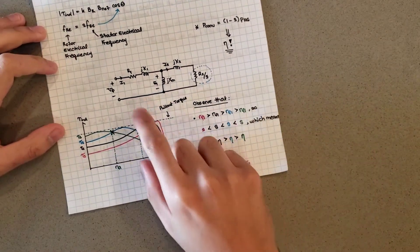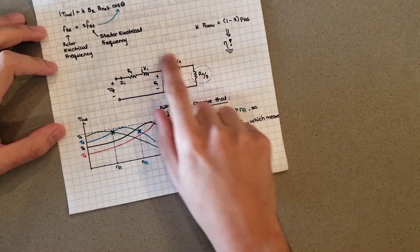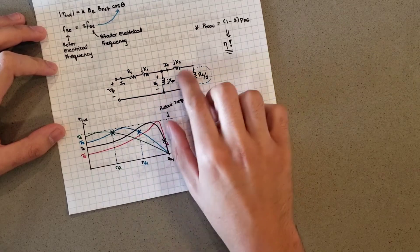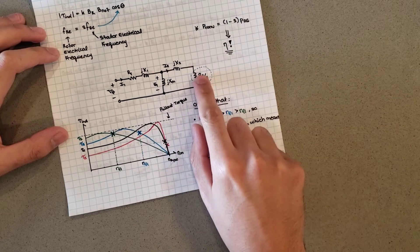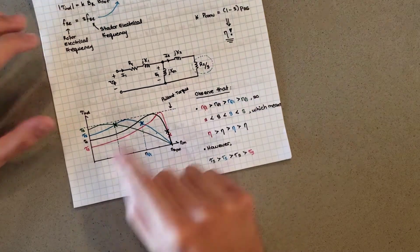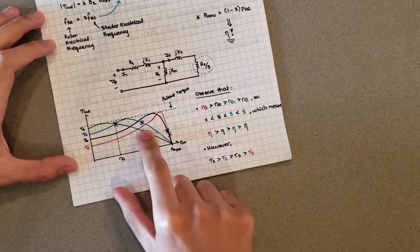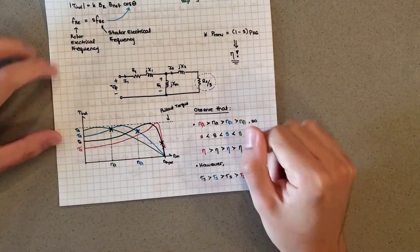You're going to find the wound induction motor has about the same parameters as the cage rotor one. The only thing that's different about it is that it has a different r2 value, and that's going to correspond to something that has a different curve.